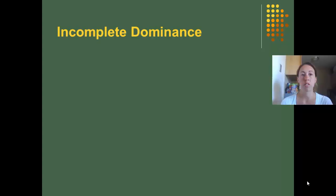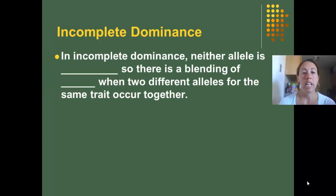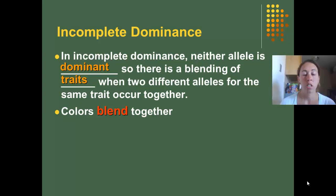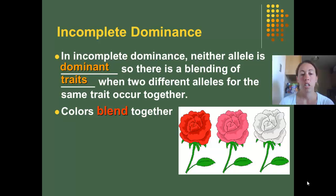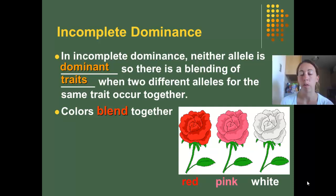So exceptions to Mendel's Laws. The first one is incomplete dominance. In incomplete dominance, neither allele is dominant, so there is a blending of traits when two different alleles from the same trait occur together — so colors blend together. For example, if you had a red flower and a white flower, you would have a pink flower because the red and white would blend together.